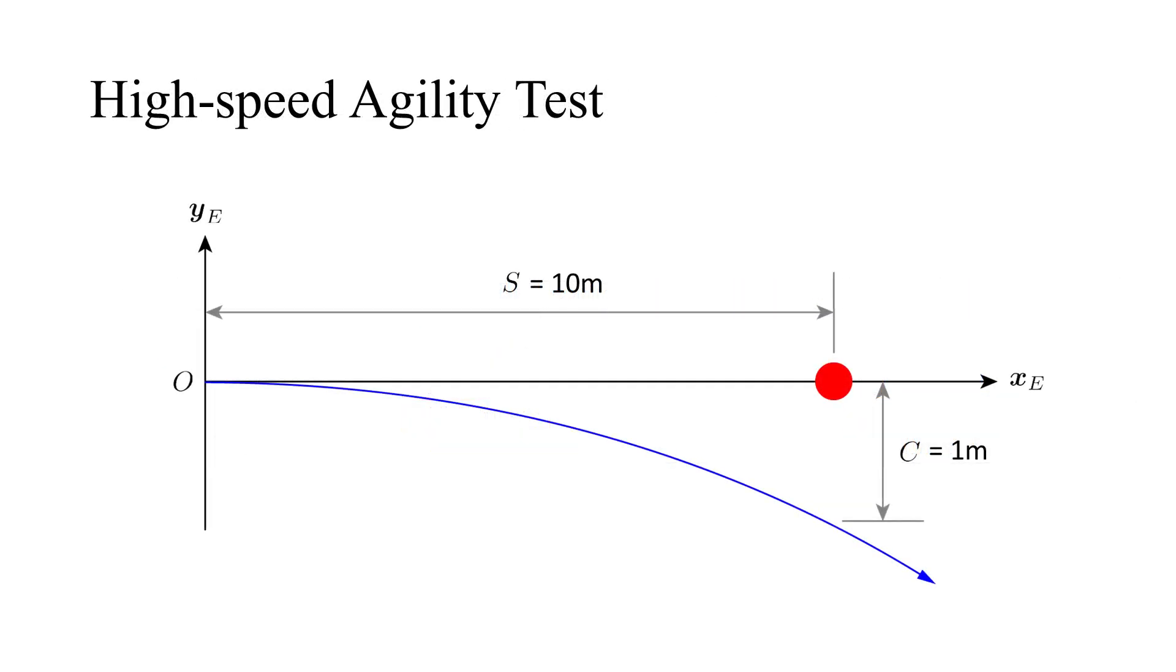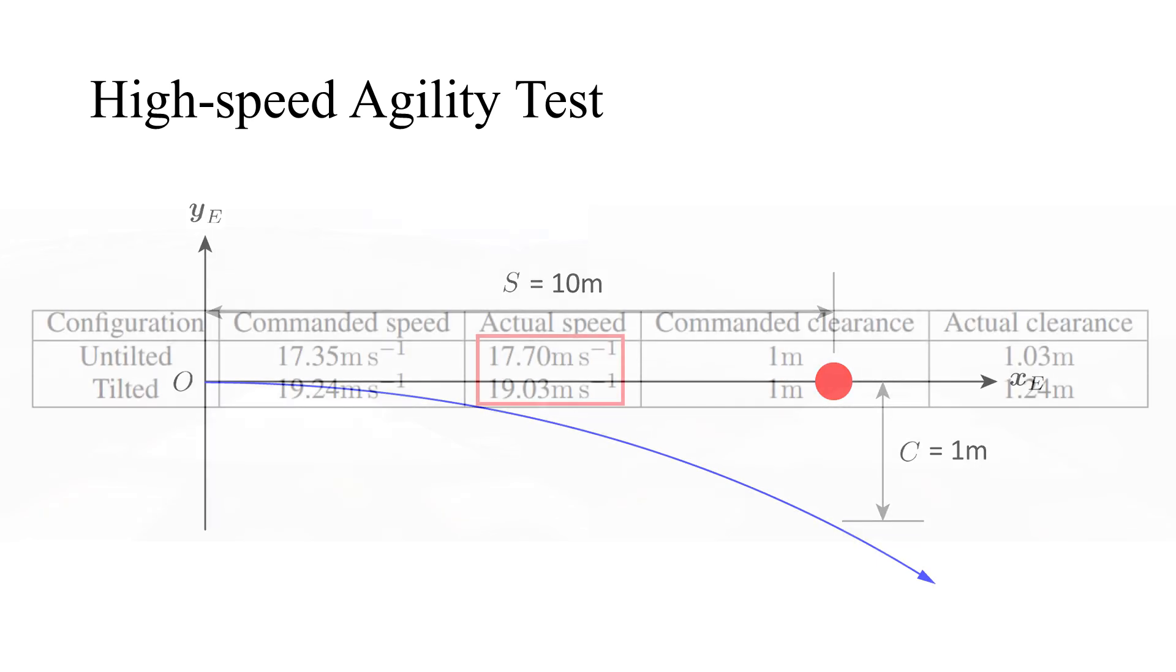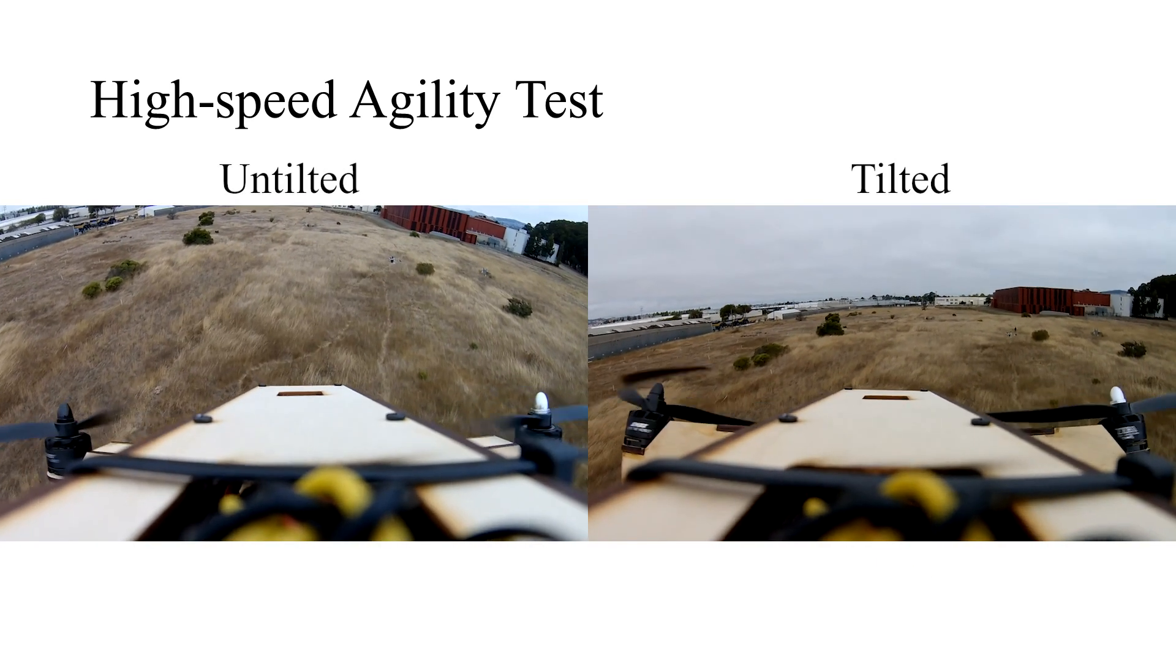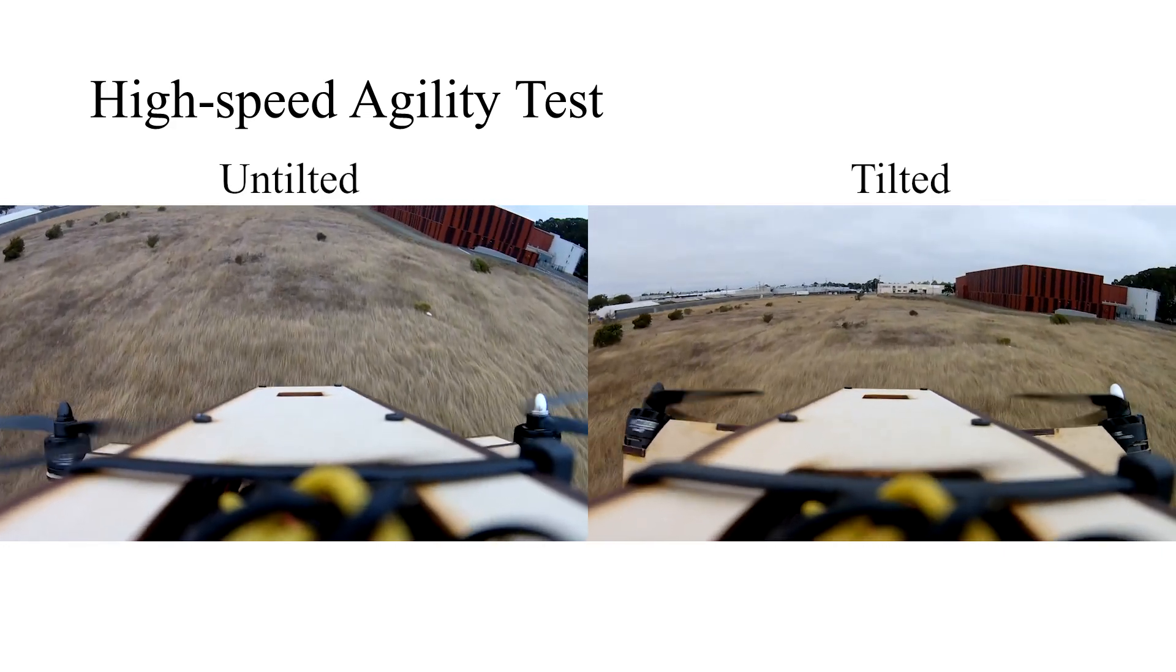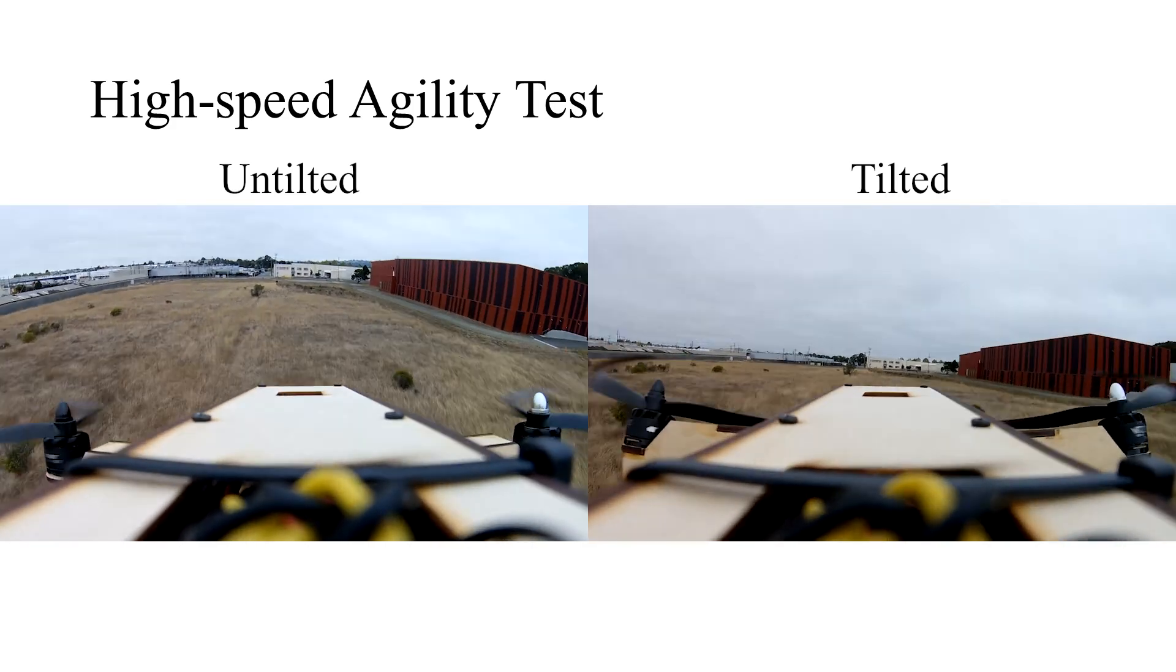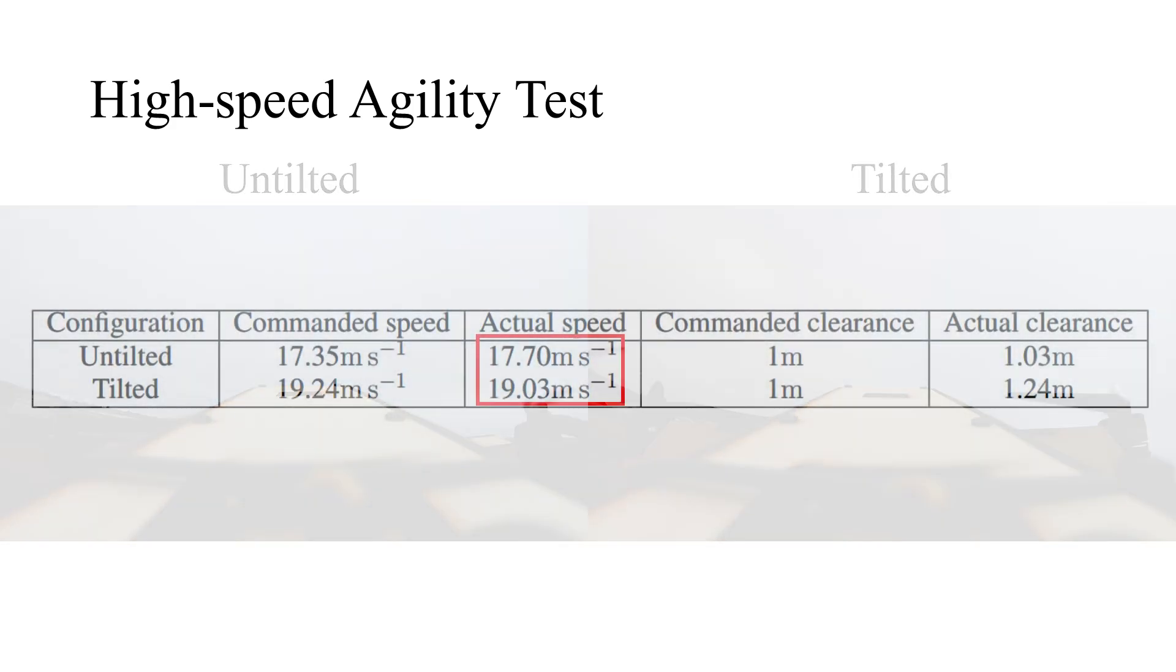Next, we quantified improvements in high-speed agility by conducting an obstacle avoidance test. The vehicle is commanded to accelerate laterally to avoid an obstacle and ensure minimum clearance. The maximum crash-free speed of the vehicle is measured, and we found that tilting increases this speed by 7.5%.